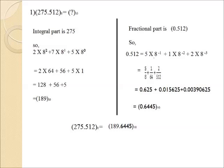Looking at the integral part: there are three digits, so the powers start from 2, 1, 0. We expand it as 2 into 8 raise to 2, plus 7 into 8 raise to 1, plus 5 into 8 raise to 0. That gives 128 plus 56 plus 5, which equals 189 to the base 10.